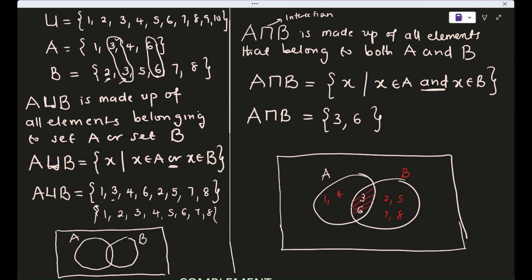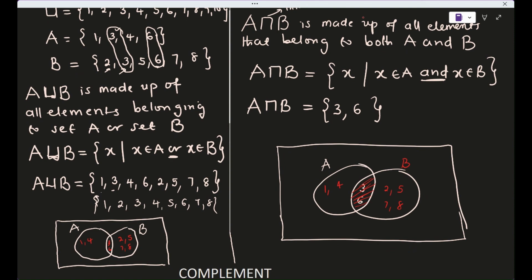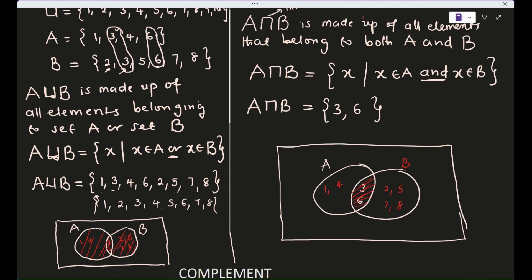A ∩ B is just the shaded overlapping area — that's the intersection. A ∪ B, on the other hand, is everything in both circles including the intersection: {1, 2, 3, 4, 5, 6, 7, 8}. The union includes all elements in the diagram, while the intersection is only the shared region.